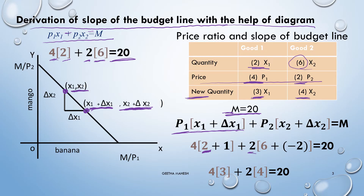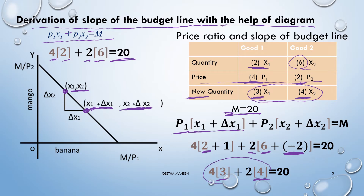Previously the quantity purchased was six units of good two, and when he chooses the new combination he has reduced good two from six to four — that means he sacrificed two units of good two, indicated by minus four in the equation. He is now buying a new combination of three units of good one and four units of good two. Multiplying and totaling, you get 20 rupees.